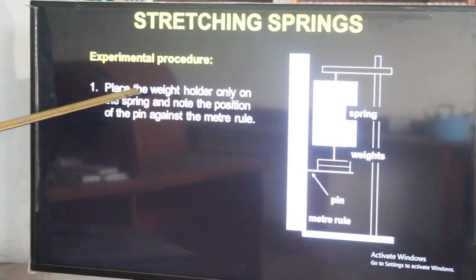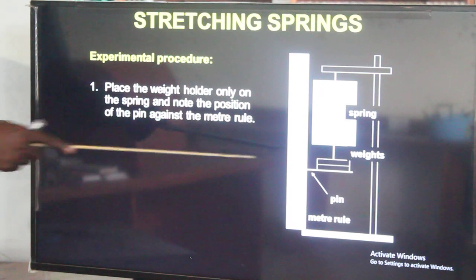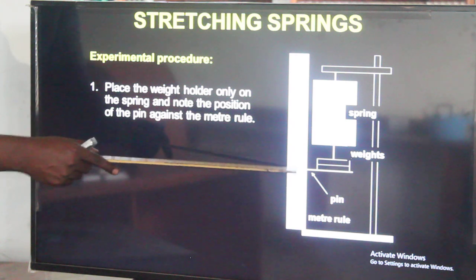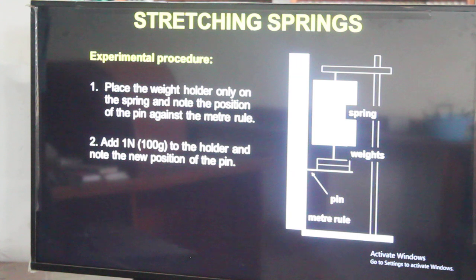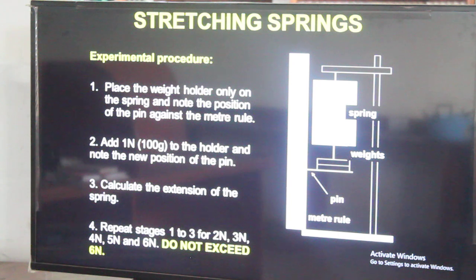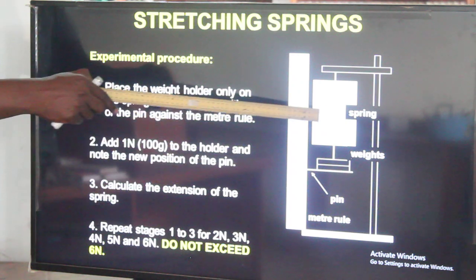When dealing with this experimentally, this is the procedure. First, we place the weight holder only on the spring and note the position of the pin against the metal rule — get the reading before you put any weight. Secondly, you add weights, let's say one newton, which is a hundred grams, to the holder and note the new position of the pin. We record that. Then calculate the extension of the spring — the difference between the two readings. You can use different forces: one newton, two newtons, three newtons, four newtons, five newtons, six newtons — and each time we record the reading. We try not to exceed six newtons because having too much weight will impact very negatively on the spring.